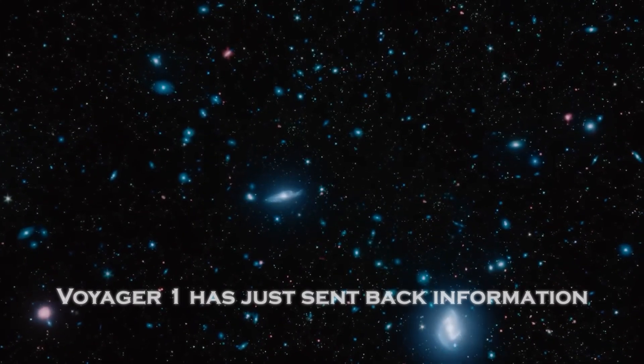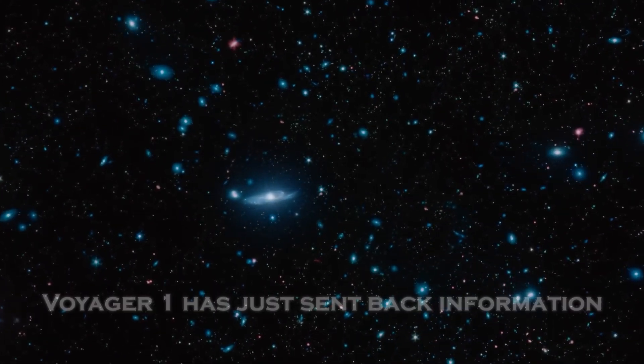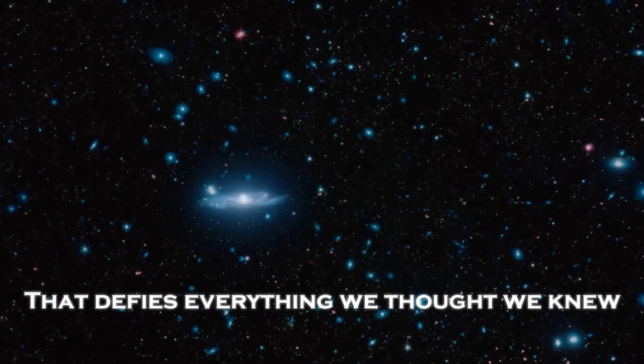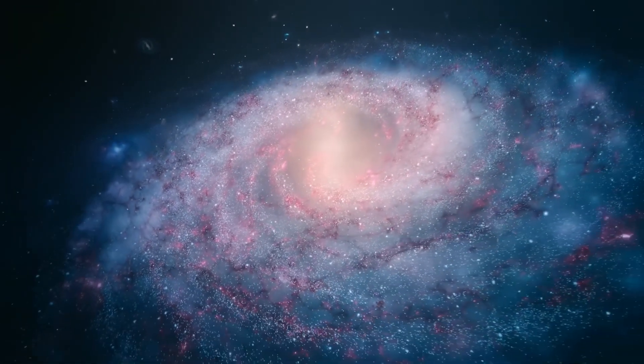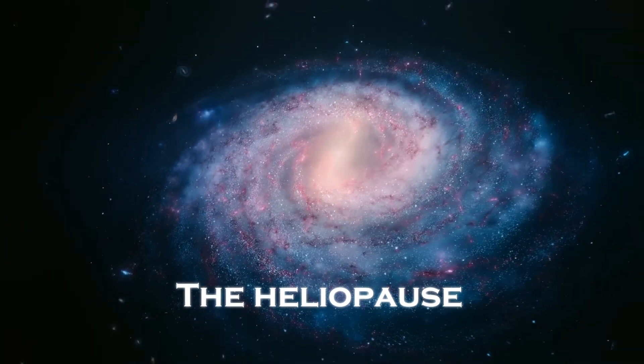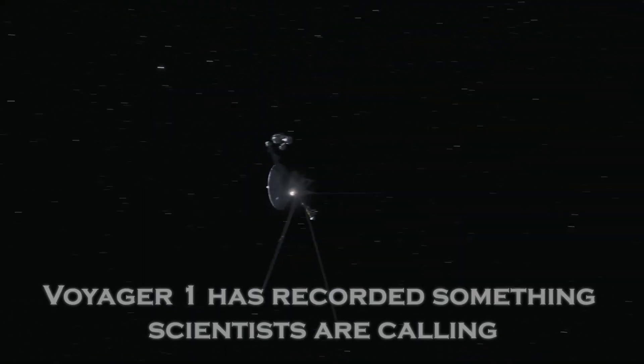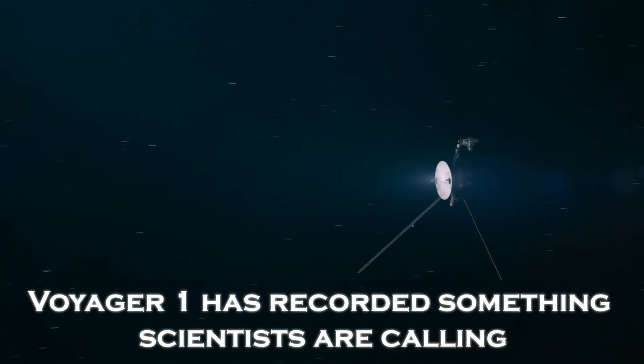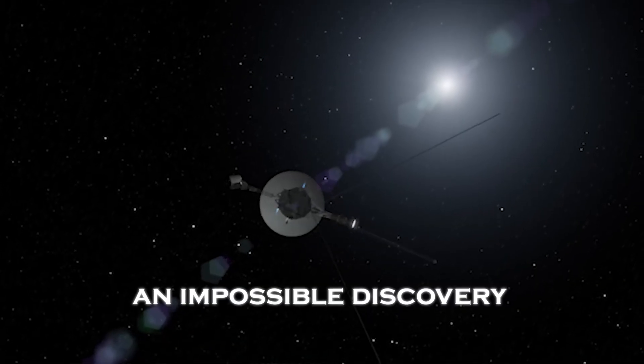But today, Voyager 1 has just sent back information that defies everything we thought we knew. At the edge of our solar system, in an area known as the heliopause, Voyager 1 has recorded something scientists are calling an impossible discovery.